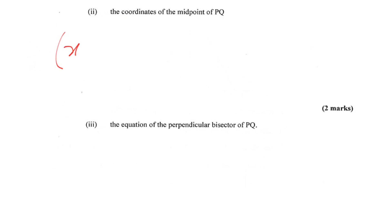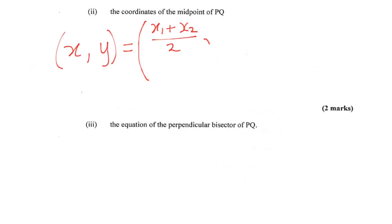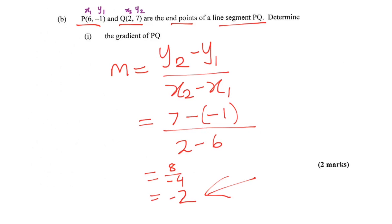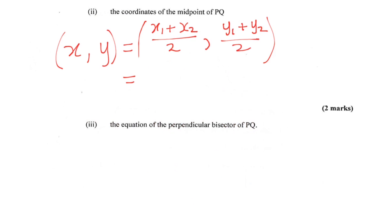To find the midpoint you'll use this equation. The coordinates of the midpoint are given by big brackets: x1 plus x2 over 2, comma, y1 plus y2 over 2. Remember it's a comma separating the two parts because you're looking for a coordinate. So x1 was 6 and x2 was 2, so it's 6 plus 2 over 2.